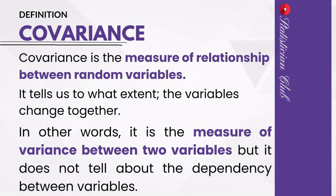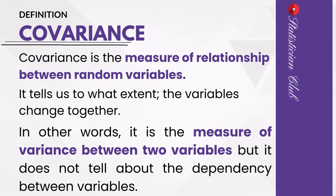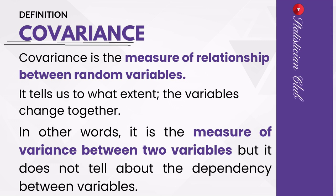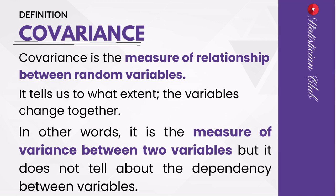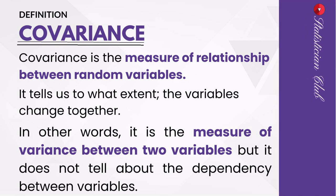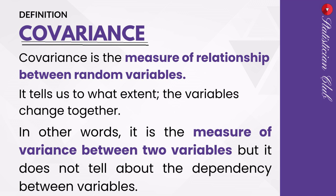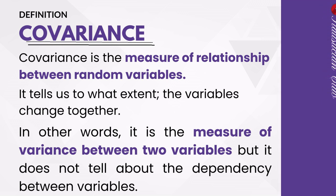Covariance is the measure of relationship between two variables. If you want to calculate any relationship between two variables — suppose you have two variables x and y with a given dataset and your task is to calculate their relationship — then you find covariance. In other words, it is the measure of variance between two variables: how two variables vary with each other, you can calculate with the help of covariance.